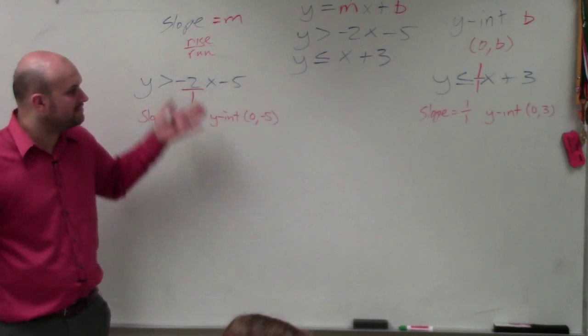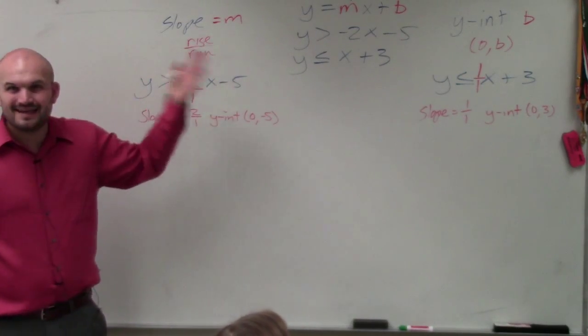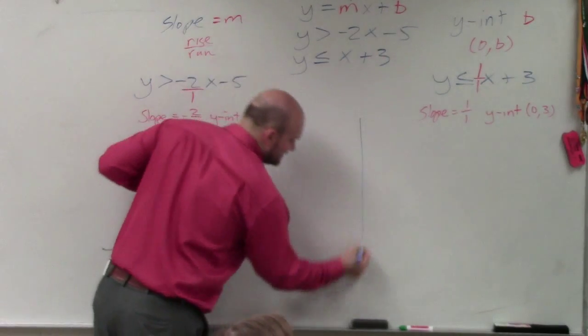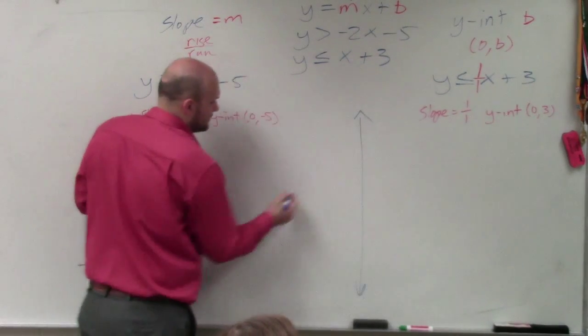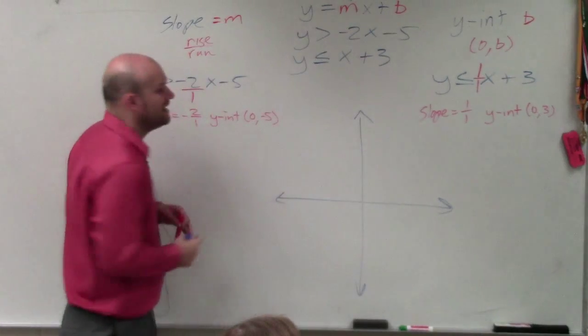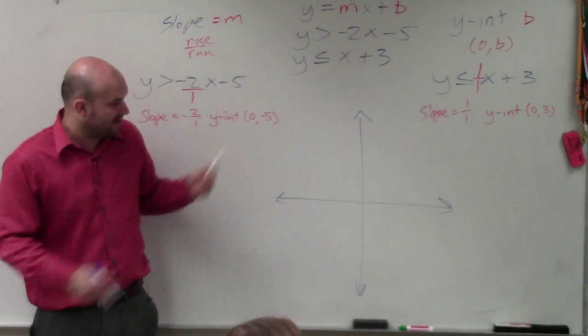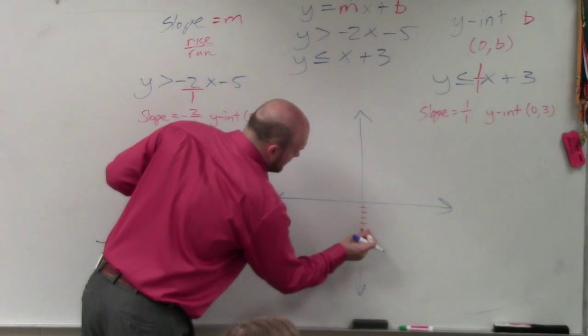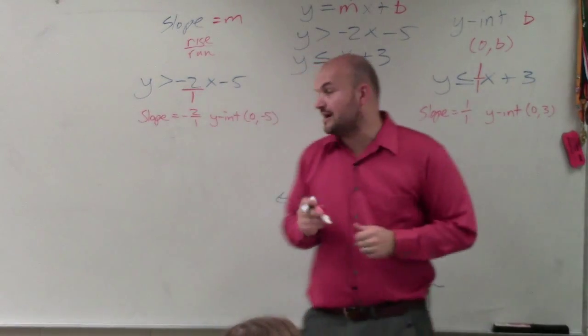If you have trouble with graphing, my recommendation is to go through these steps. It takes a little bit longer, but it really gives you full proof of everything you need to graph. Because now, all you do is plot the y intercept. 0, negative 5 is down 5. So that's 0, negative 5.